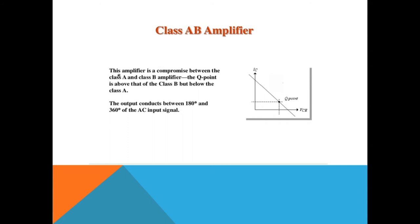Next is the class AB power amplifier. In class AB, the Q-point is adjusted just above the cut-off region, meaning the transistor has just entered the active mode. Since the Q-point is just shifted above the cut-off region, the transistor will conduct more than 180 degrees but less than 360 degrees. Therefore, distortion in class AB becomes less than class B, and the efficiency of class AB is greater than class A but less than class B. Distortion is greater than class A but less than class B.